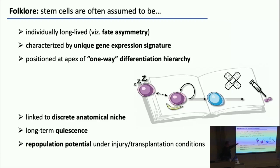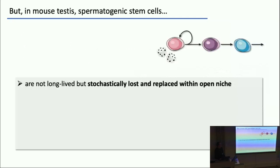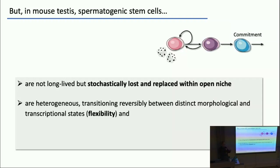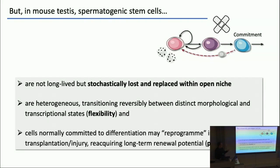We started with this folklore: individual long-lived, unique gene expression, one-way hierarchy — none of them are true for the germline apparently. In fact, stem cells are not long-lived but are stochastically lost and replaced within an open niche, not a discrete anatomical niche. They're heterogeneous, transitioning reversibly between states biased for renewal and primed for differentiation — I can think of this as flexibility. And like so many epithelial tissues, cells which are normally committed to differentiation are able to reprogram in response to injury or transplantation and reacquire stem cell potential: flexibility and plasticity.